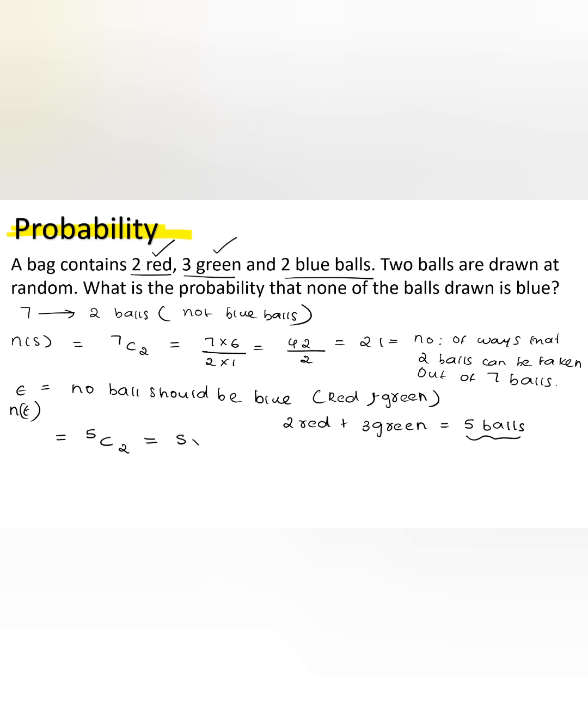That means 5 × 4 ÷ 2 × 1, which is equal to 20 ÷ 2, which equals 10. These are the number of ways that 2 balls can be drawn out of 5 balls which are not blue balls.